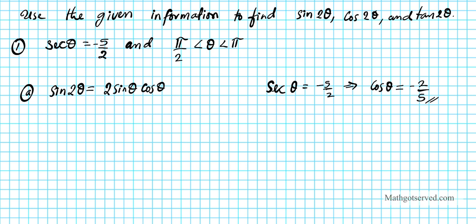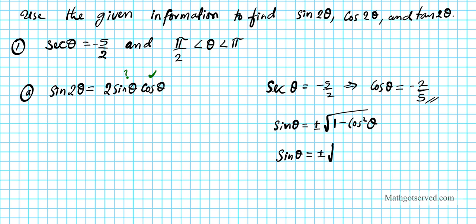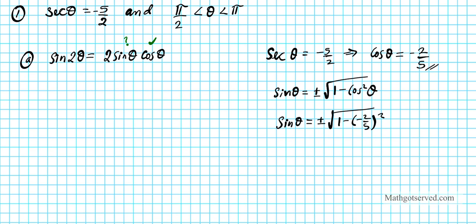Next, we need to find sine. In order to find sine using cosine, we're going to use the identity sin θ equals plus or minus the square root of 1 minus cosine squared theta. So sin θ equals plus or minus the square root of 1 minus negative 2 over 5 squared. Squaring the top and bottom, we get plus or minus the square root of 1 minus 4 over 25.